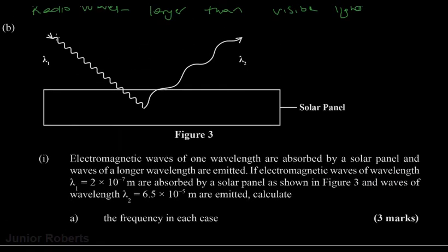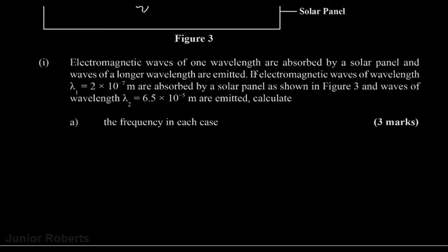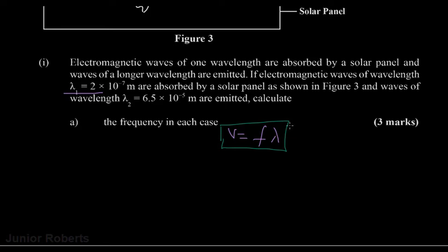We're given a diagram showing photons of light striking a solar panel with some reflected. The question states that EM waves of wavelength λ₁ = 2×10⁻⁷ m are absorbed and waves of wavelength λ₂ = 6.5×10⁻⁵ m are emitted. We need to calculate the frequency in each case using the wave equation v = fλ.